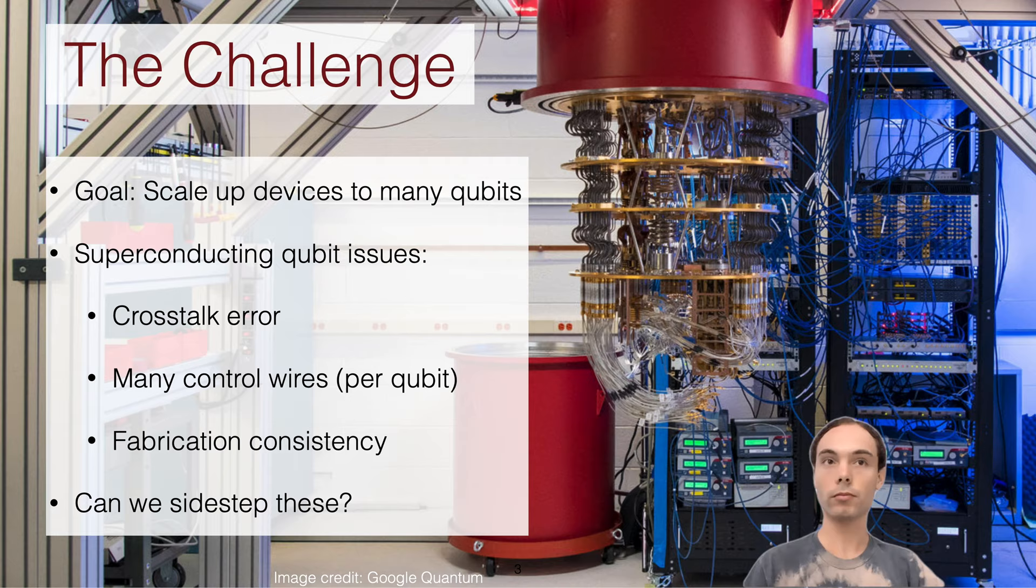So there's many challenges to scaling up these systems to millions of qubits. For this talk I'll be focusing on superconducting qubits in a dilution refrigerator, and there's some main issues with scaling them up, such as crosstalk error, which is error between qubits that are near each other. You have many control wires that you have to engineer and fit into this refrigerator, and you also have things like fabrication consistency of many qubits on a silicon device. So for this talk we'll present an architecture that attempts to sidestep many of these issues or reduce their effect through architecture design.